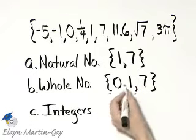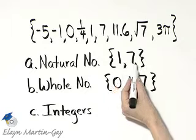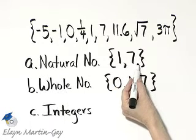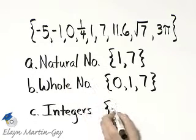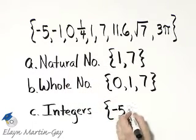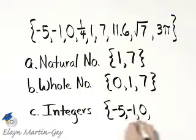And then what about the integers? The integers contain the natural numbers and their opposites, and also zero. So let's list the integers: negative five, negative one, zero.